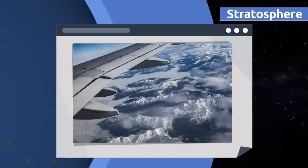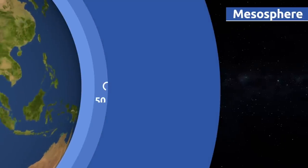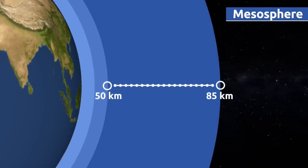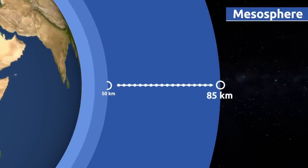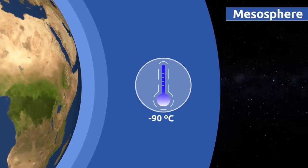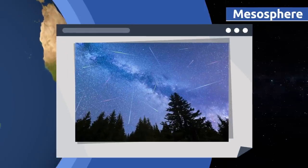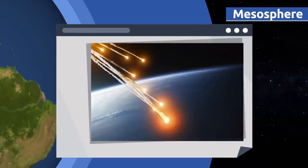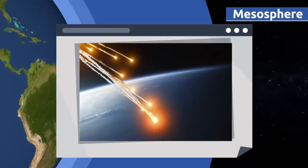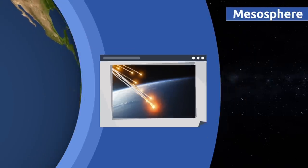Did you know that airplanes fly in the stratosphere to avoid turbulence? The mesosphere extends to an altitude of 50 to 85 kilometers above sea level and is the coldest layer of the atmosphere — temperatures can drop to 90 degrees Celsius below zero. Shooting stars occur in the mesosphere: these are meteors that, as soon as they hit the mesosphere, start burning up and leave a tail behind them.